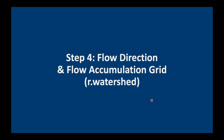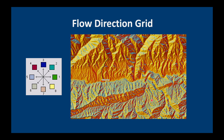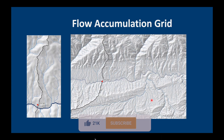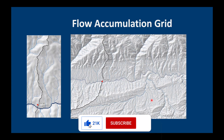The next step is to calculate the flow direction and the flow accumulation grid. The flow direction grid shows us the direction of the steepest downstream gradient, and the flow accumulation grid shows us how many cells contribute to the flow in every downstream cell.